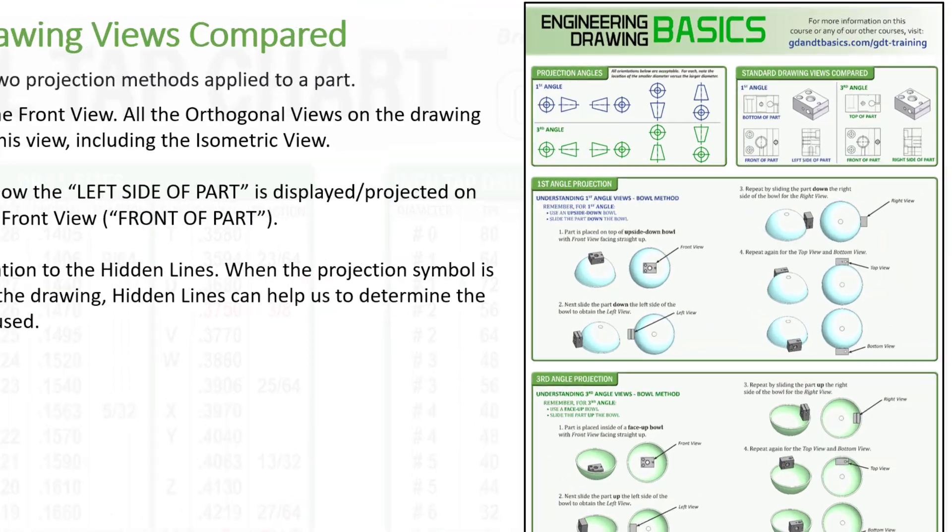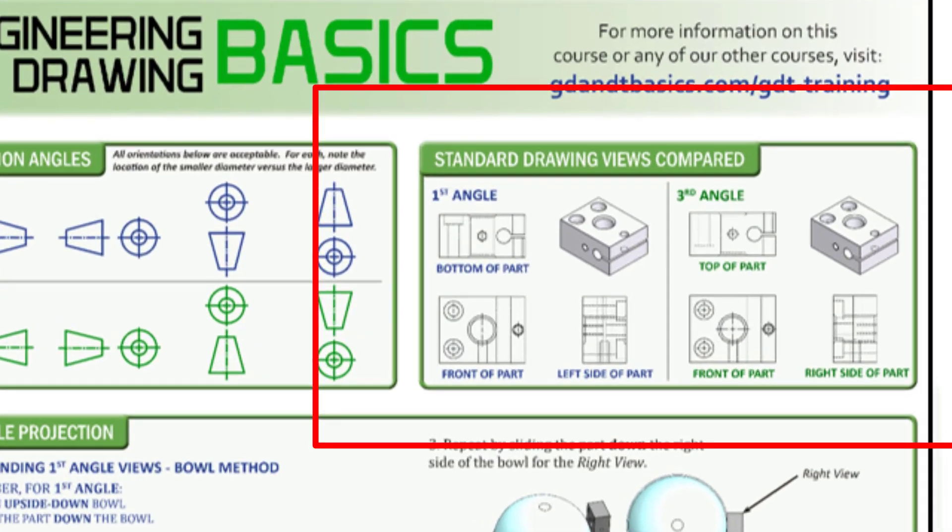Now let's zoom in on the standard drawing views compared. Instead of using the plug symbol there, let's apply it to a real part and take a look at it. This is what's on that wall chart. So first, let's identify the front view. Like I stated before, now all orthogonal views on the drawing will originate from this view, including the isometric view. That's a big one. A lot of drawing creators will violate that rule, but that projection for isometric views is supposed to also come from that front view. We're not supposed to go in and pick the isometric view that clarifies the most for the part. It's based off of what we chose as the front view. That's a design tip there. Make sure you're always creating that from that front view.